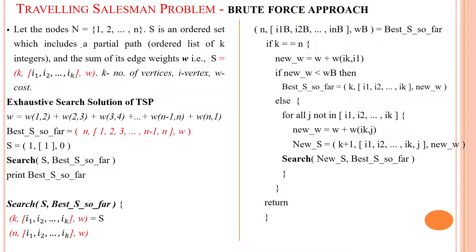As per the traveling salesman problem, the cities are considered as n number of vertices 1 to n, and S is the notation for an ordered set of vertices which has a partial path as an integer value. The sum of its edge weights is denoted as S, from i equal to 1, 2, and so on until k number of vertices, then the weight of each edge connecting these vertices.